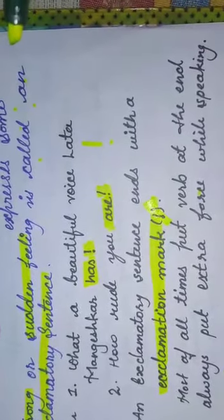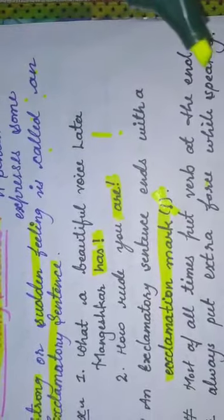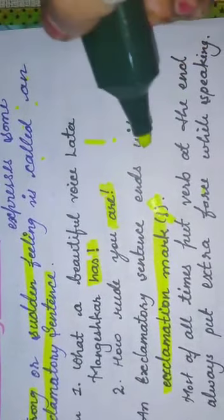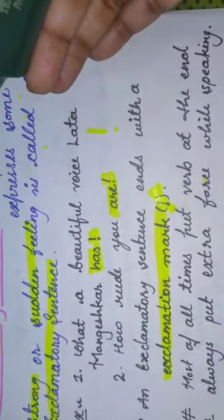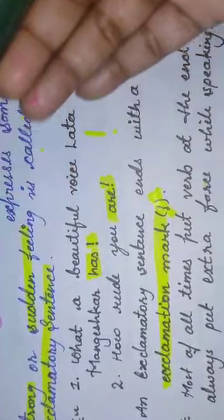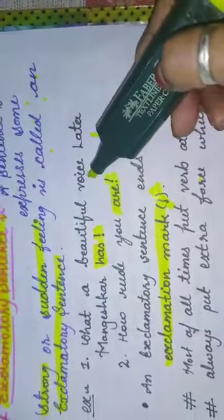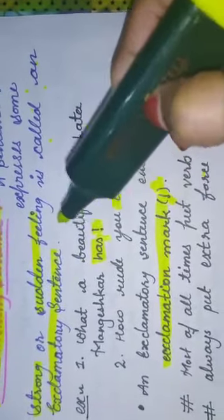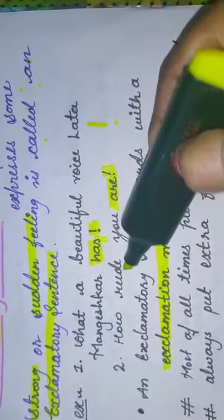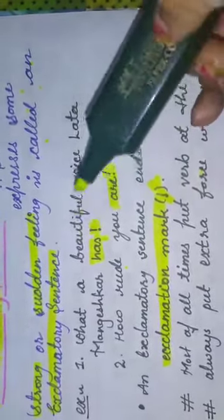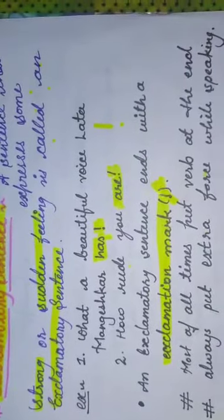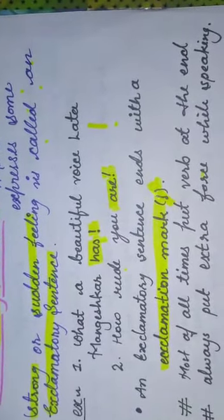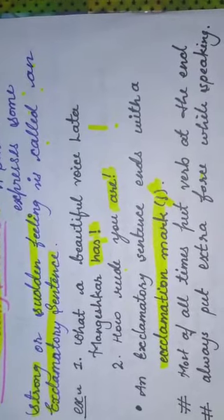Some more important points about exclamatory sentences. Most of the time we put auxiliary verbs in exclamatory sentences at the end of the sentence. Like, what a beautiful voice Lata Mangeshkar has—'has' is the auxiliary verb. How rude you are—'are' is the auxiliary verb. What a beautiful dress it is—'is' is the auxiliary verb.